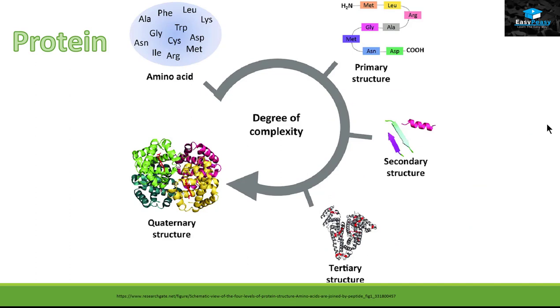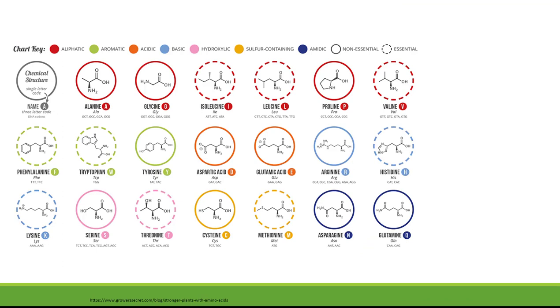The next macromolecule is proteins. Protein is made up of repetitive units of amino acids. The most common amino acids that we have in our body are 20 different types. Some are hydrophobic, some are uncharged hydrophilic, some are acidic, and some are basic.